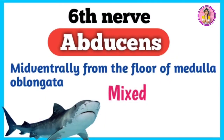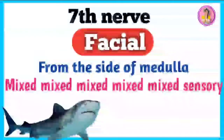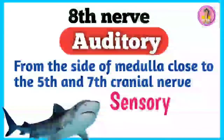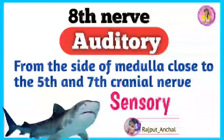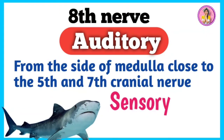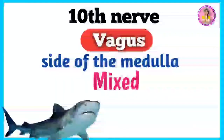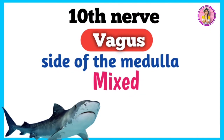The seventh nerve is facial. Its origin is from the side of the medulla and its physiological nature is mixed. The eighth nerve is auditory. Its origin is from the side of the medulla close to the fifth and seventh cranial nerves, and its physiological nature is sensory. The ninth nerve is glossopharyngeal. Its origin is from the ventrolateral side of the medulla, and its physiological nature is mixed. The tenth nerve, vagus, originates from the side of the medulla, and its physiological nature is mixed.